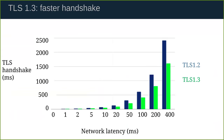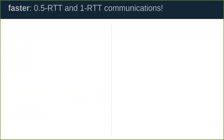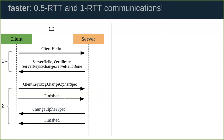TLS 1.3 is also much faster because the handshake messages were completely rearranged. In TLS 1.2, the client sends a ClientHello, the server replies with ServerHello, Certificate, and so on — that's already one round trip. Then the client sends ClientKeyExchange and more messages, requiring a second round trip before application data can be sent. That's two round trips total.